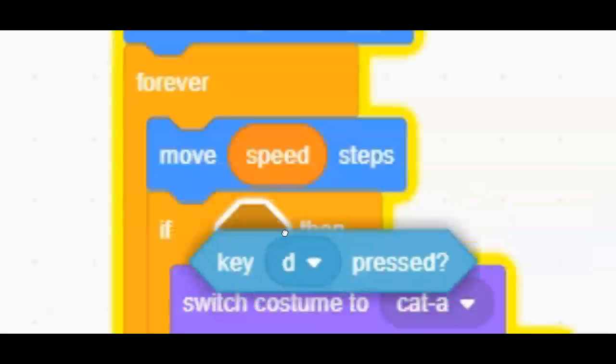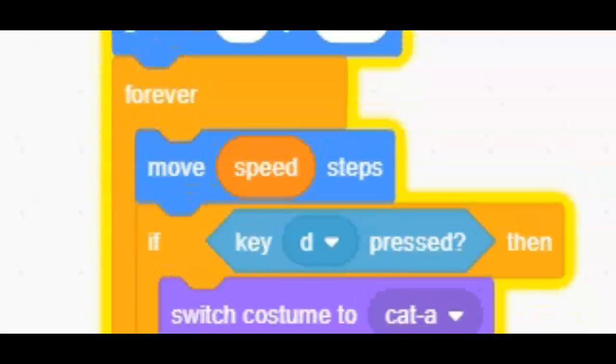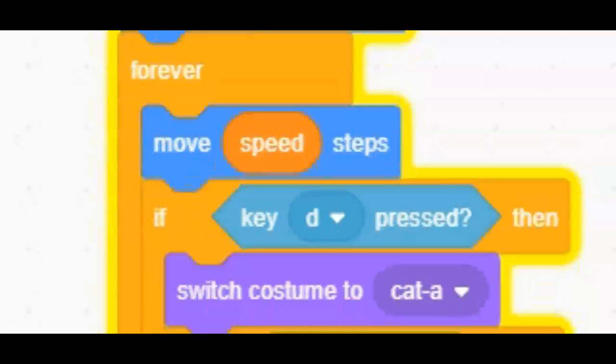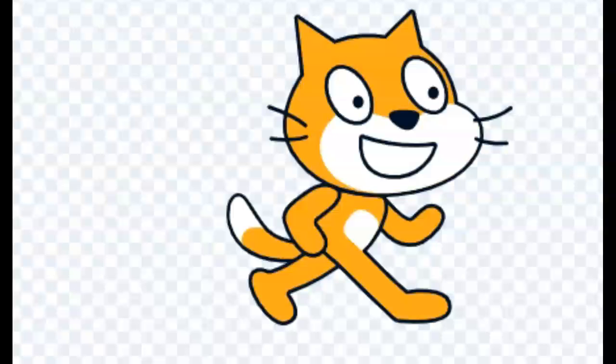And then here's the forever loop. Move speed steps. If D is pressed, which is the button to go to the right, switch costume to Cat A. And Cat A is one of the two costumes that automatically came in. I decided to get rid of the other ones since I'm not going to be using them today.